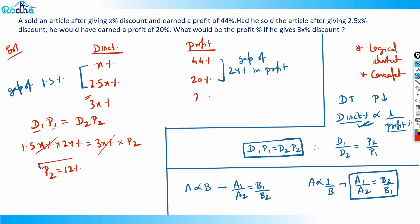So 12 percent is the answer. A very logical question solved in a very logical way. You can apply this funda — d1 times p1 equals d2 times p2 — in all such questions wherever discount and profit are given, and avoid unnecessary equations. This is a great concept you must remember.